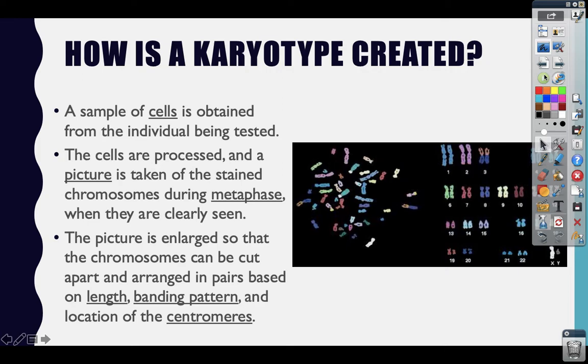When you're looking at a karyotype, remember that the picture is taken during metaphase, usually of mitosis, when we can see the chromosomes lined up in the middle of the cell. Those chromosomes aren't paired, so what you end up with is basically this chromosome smear.